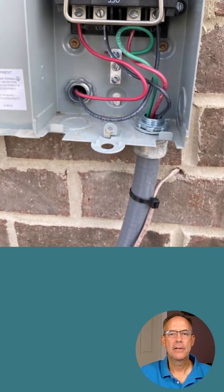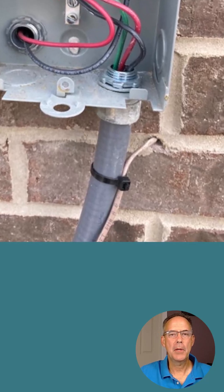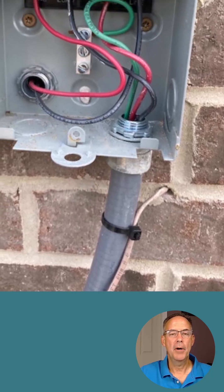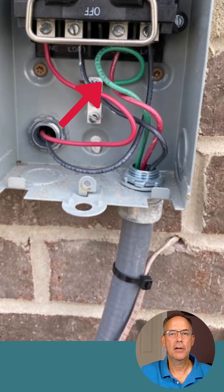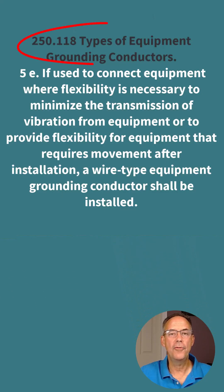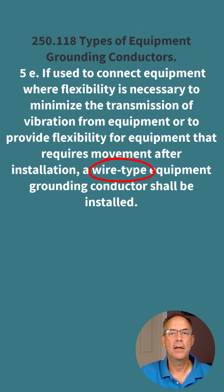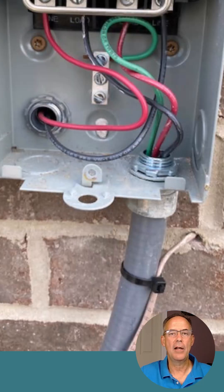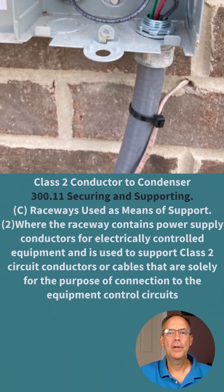From the disconnect to the unit, the code allows some type of flexible conduit such as liquid-tight flexible conduit. However, an equipment grounding conductor (EGC) always has to be provided, because according to 250.118 a wire-type EGC is required for any equipment that has vibration issues, so there is a solid fault path back from the unit to the disconnect and back to the source.